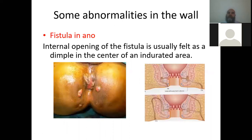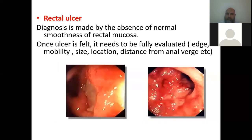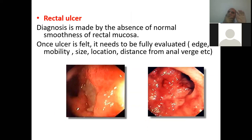Some abnormal wall findings: for a perianal fistula, the external opening is visible outside but the internal opening is felt by the finger — you feel firmness, a dimple, or an indurated area inside. A rectal ulcer is felt as a depression or an area where there is no mucosa. When you find an ulcer, describe it: its size, location in centimeters from the anal verge, and clock position.